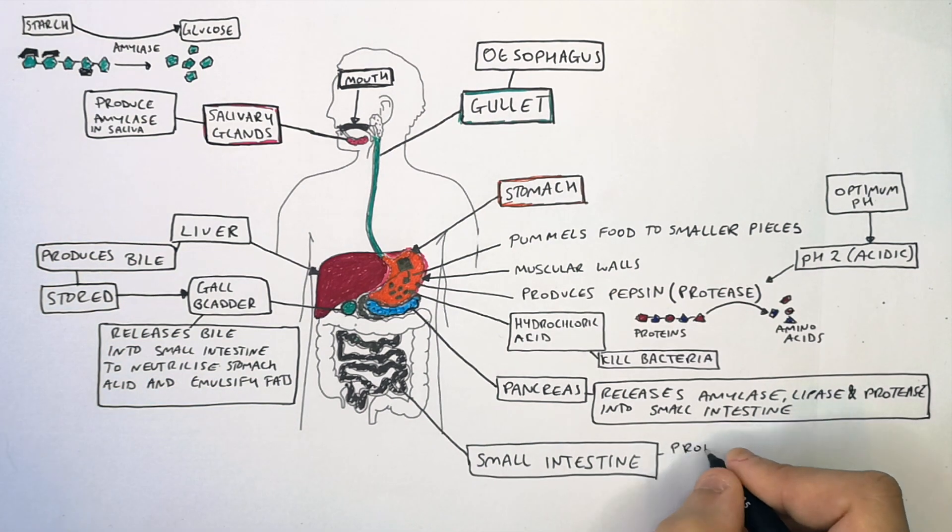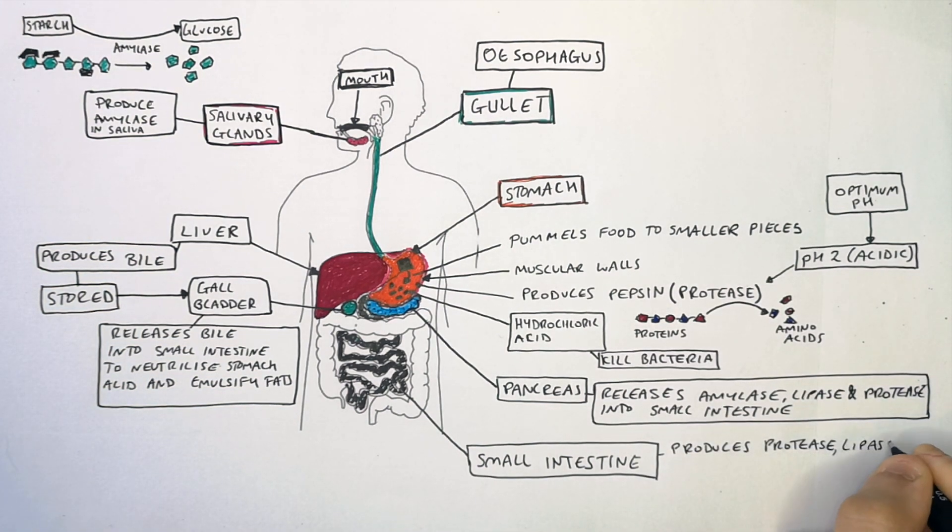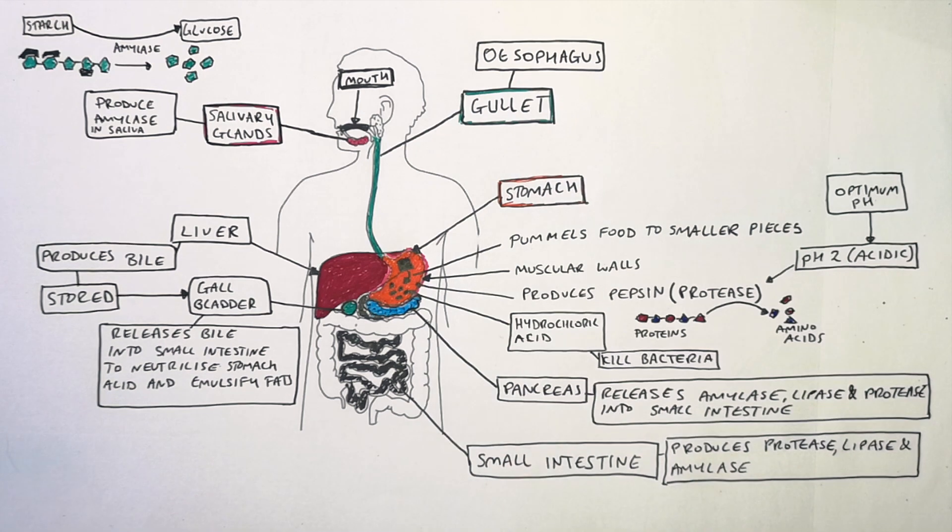The small intestine also produces the enzymes protease, lipase, and amylase. These enzymes help break down food even further. The small intestine is where digested food is absorbed into the blood.